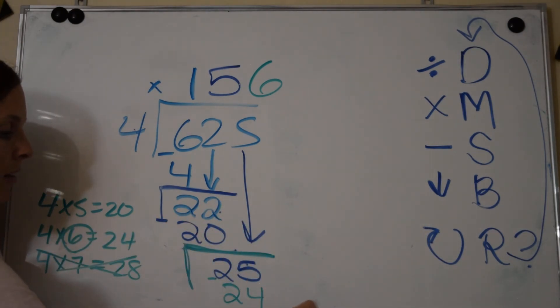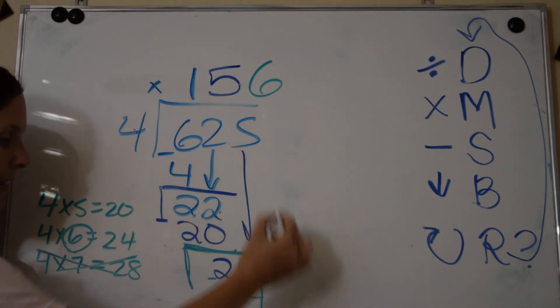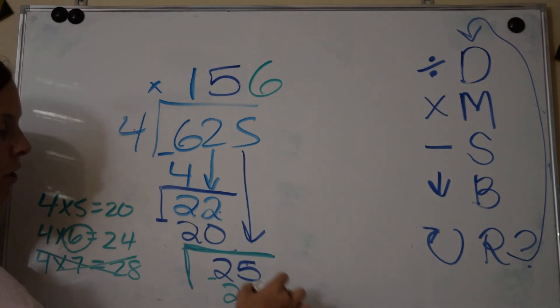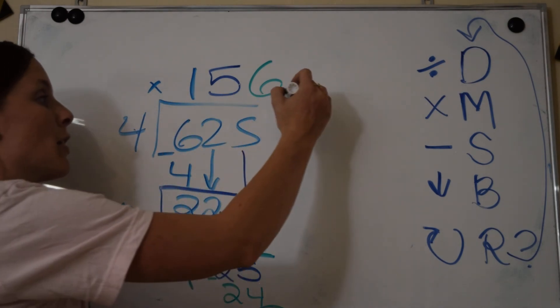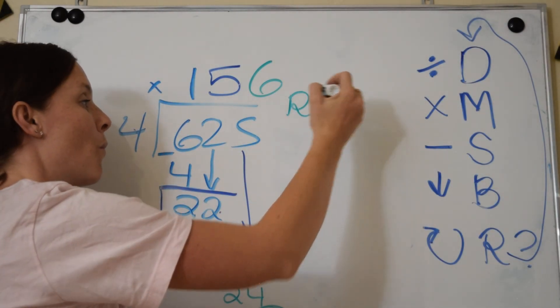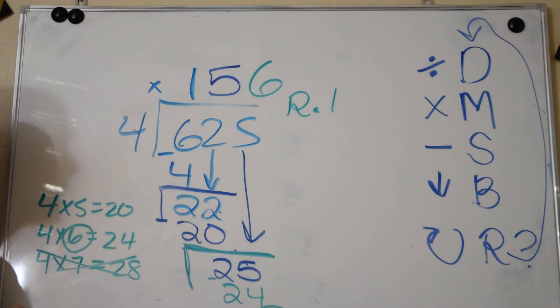Then we subtract and we have 1. Bring down—I don't have anything to bring down, so we have a remainder. Your answer is 156, but don't forget your remainder: remainder 1.